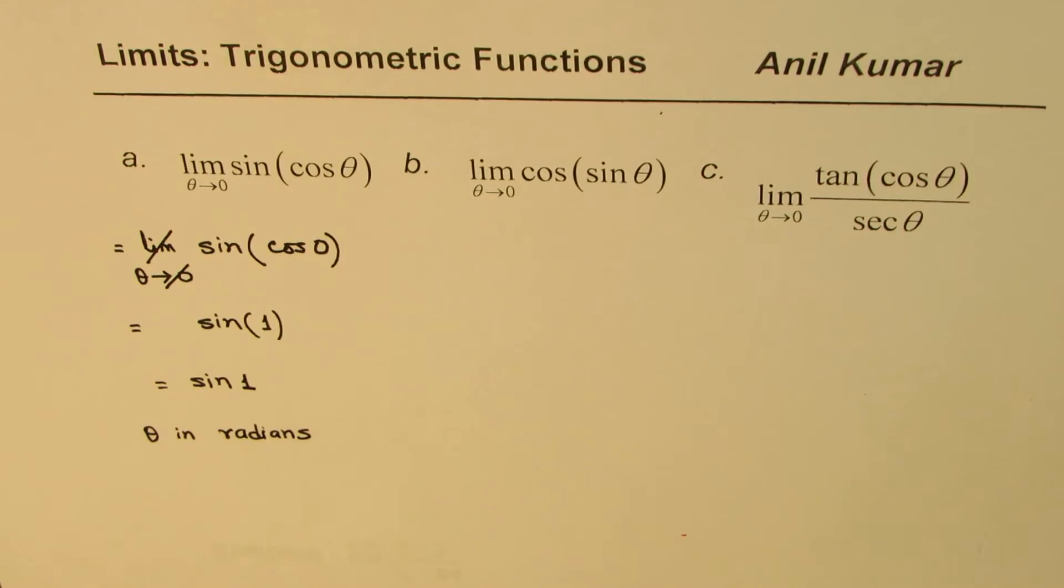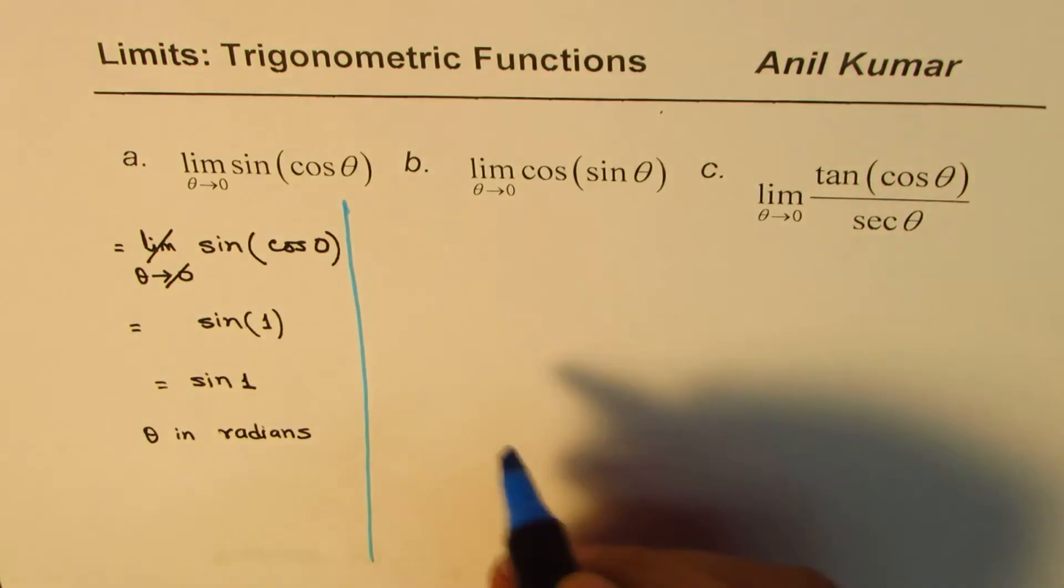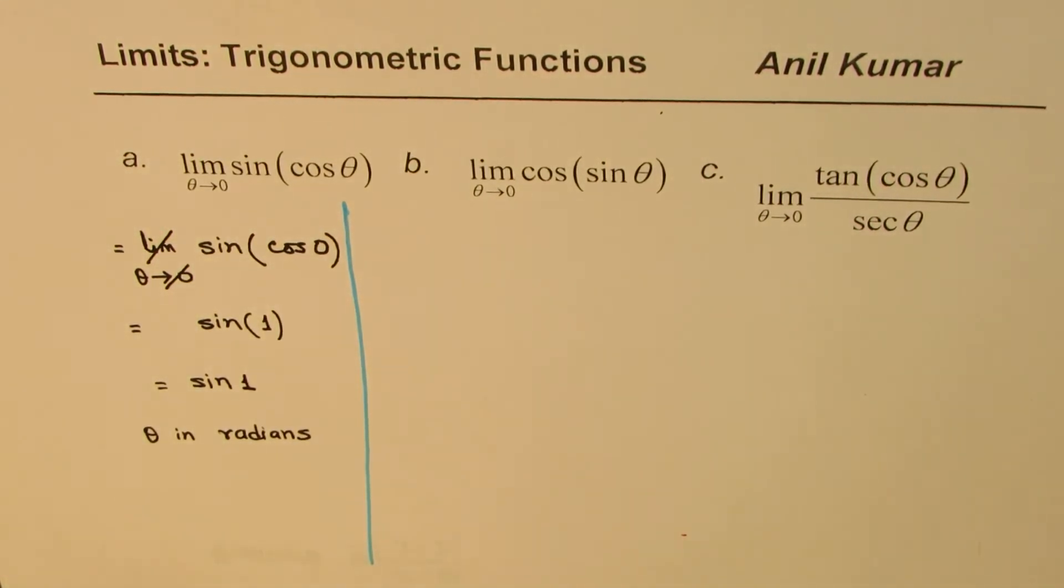Whenever we are trying to find limits for trigonometric functions, always the given angle will be in radians. Okay. So you can follow the same process and do the next one. Let's do it.